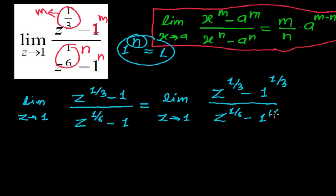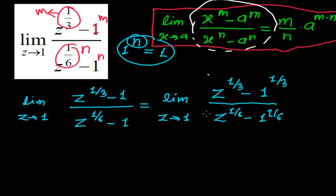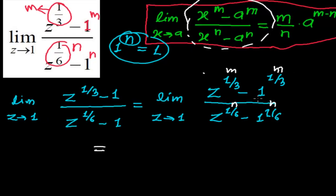This form is exactly like the formula. So now I'm just applying the formula and getting the value. The formula gives m by n, where 1/3 works as m and 1/6 works as n.